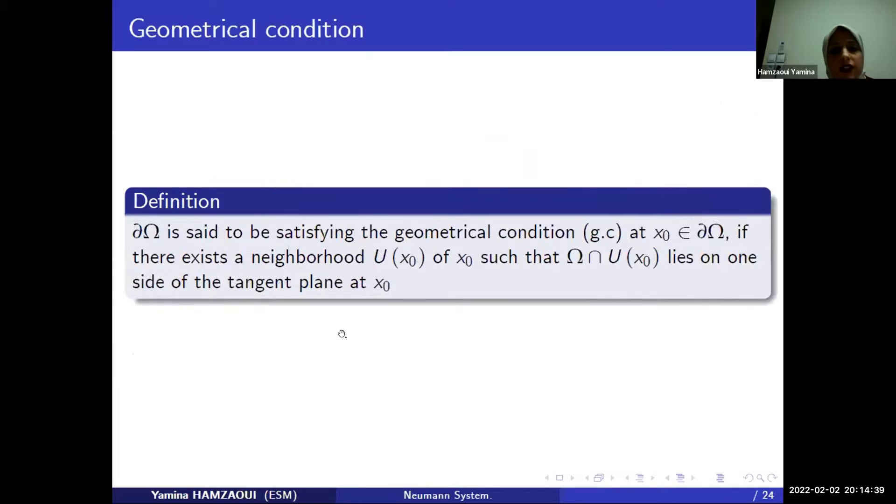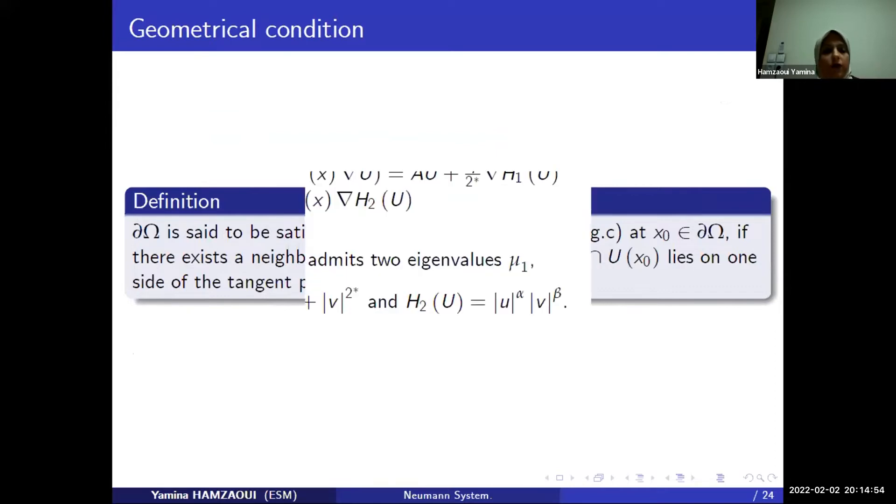We define the edge of omega is said to be satisfying the geometrical condition at x0. If there exists a neighborhood U of x0, such that this intersection leads on one of the sides of the tangent plan at x0.